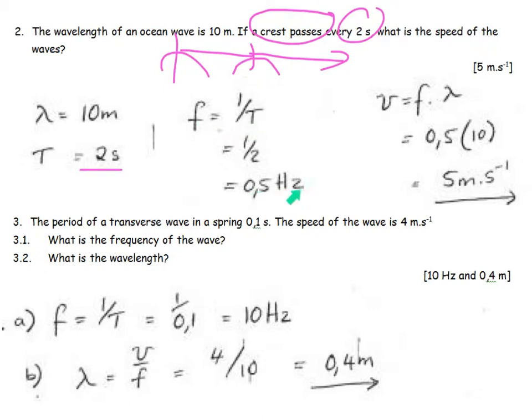1 over 2, 0.5 hertz. The wavelength is given to me in meters, conveniently. So V is equal to lambda F, 0.5 times 10, and I get 5 meters per second.